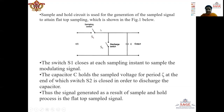Now we will see the electronic circuit which is used to generate the flat top sample signal. Here I consider the combination of two switches, S1 and S2, where S1 is called the sampling switch and S2 is called the discharge switch. At the instant where the pulse begins, switch S1 closes to sample the modulating signal. When switch S1 closes, the capacitor will charge towards the input voltage x(t). Since the forward resistance of the switch is very low, the capacitor will instantaneously charge to this voltage.